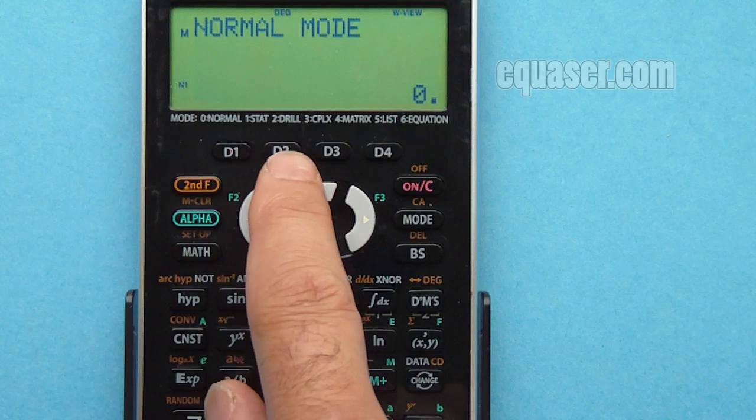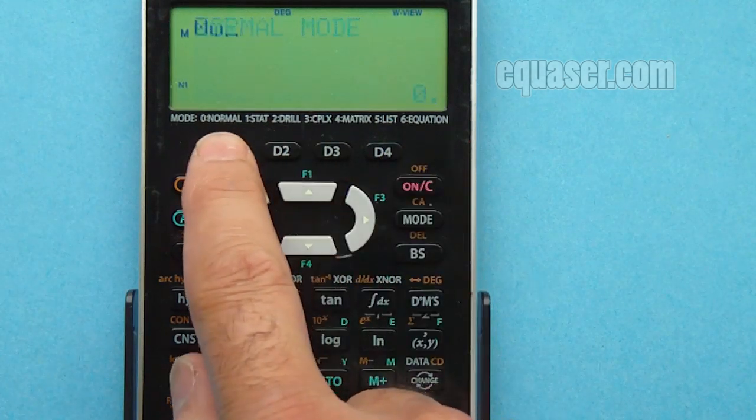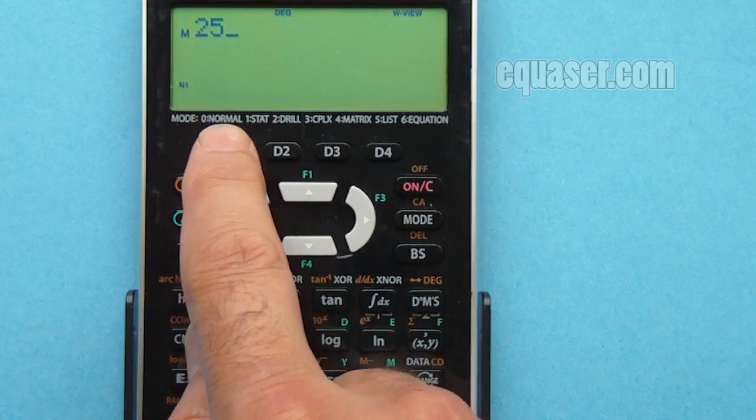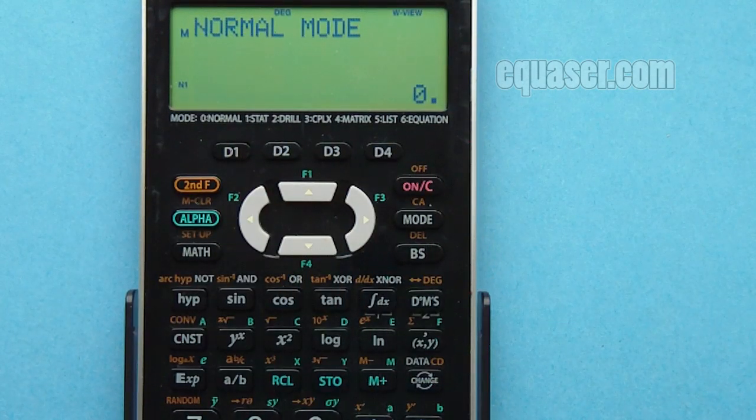Let's press it. If I press 25 and D1, 25 milli. I'm going to program this one as micro.